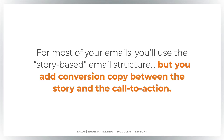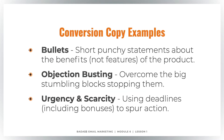The conversion copy is usually the bulk — the biggest piece of the email. Here are some examples of the kinds of things you do in conversion copy. You include bullets, which are short, punchy statements about the benefits — not the features, but the benefits of the product. You'll do objection busting, overcoming the big stumbling blocks that are stopping people from buying. And you'll use urgency and scarcity, talking about deadlines, including bonus deadlines, to spur them to take action.